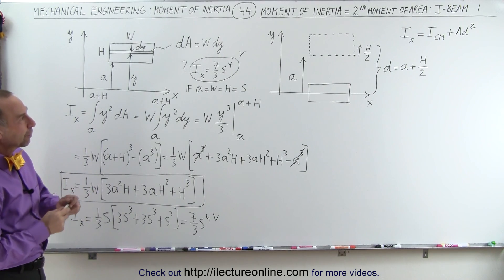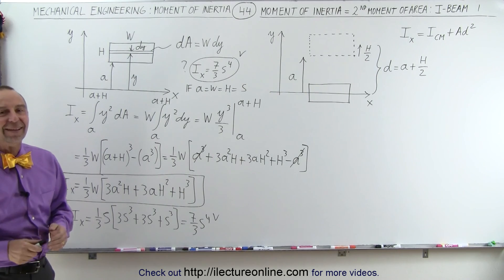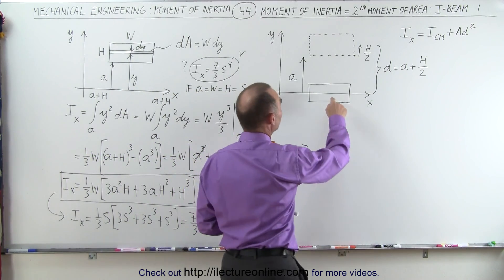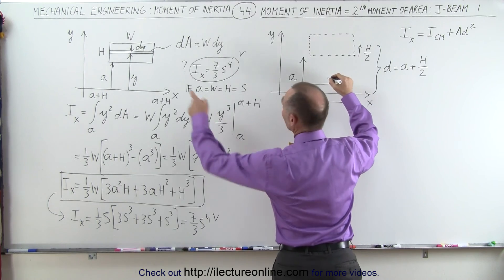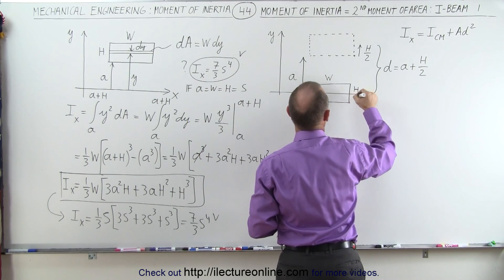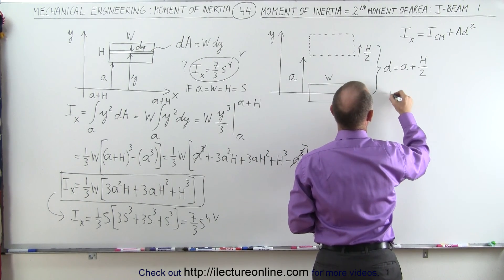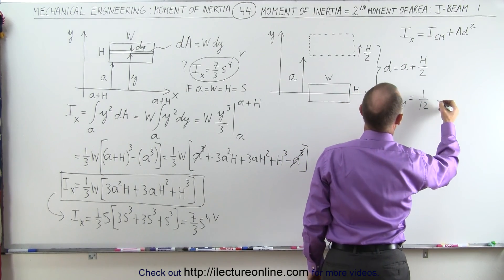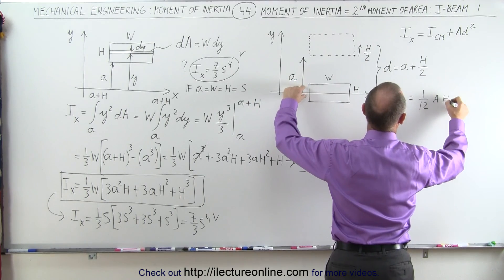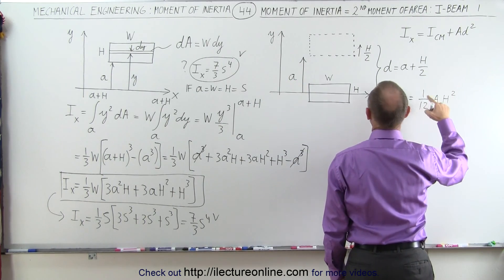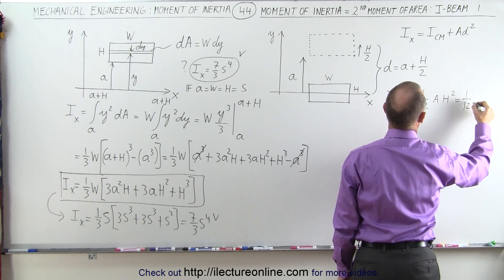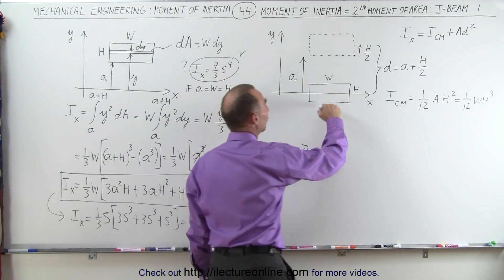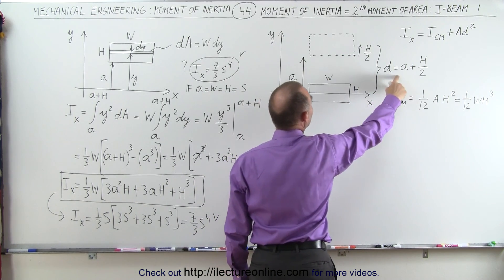Now, let's use the parallel axis theorem to see if we can get the same result. First, we want the moment of inertia about the center of mass of that beam. This has a width W and a height H, so the moment of inertia about the center of mass equals one-twelfth times the area of the beam times H squared. Since the area equals H times W, this becomes one-twelfth W H cubed.